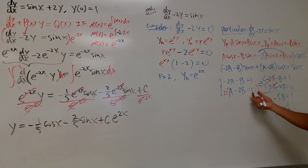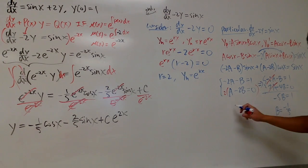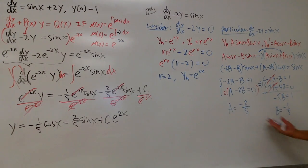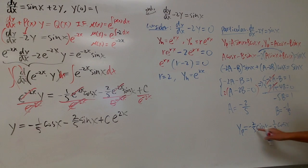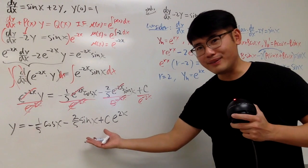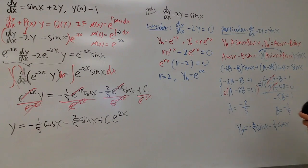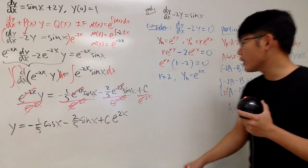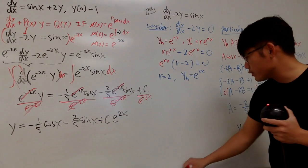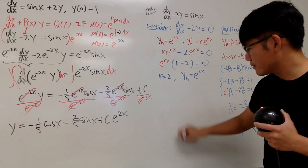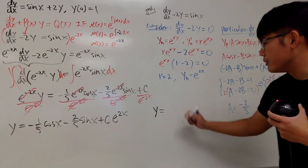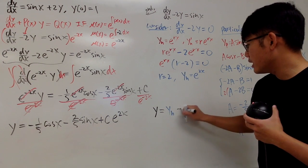From a equals 2b, we get a equals negative 2 over 5. So y_p equals negative 2 over 5 sine x minus 1 over 5 cosine x. That matches the answer from Method 1! By the superposition principle, we add y_h and y_p together.